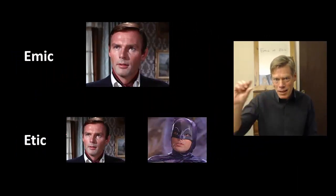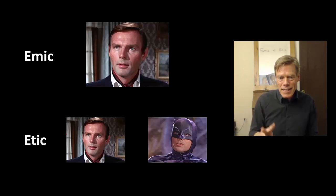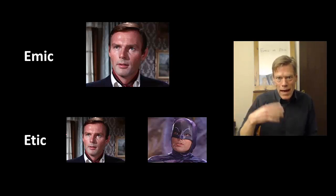So at the emic level, remember that phonemic that we talked about at the beginning, at the emic level, Bruce Wayne is a single individual. But at the etic level, at the level of realization, he can either appear as Bruce Wayne or as Batman. So we know that somehow his essence is Bruce Wayne, but he manifests as either Bruce Wayne or Batman. That's the etic level.